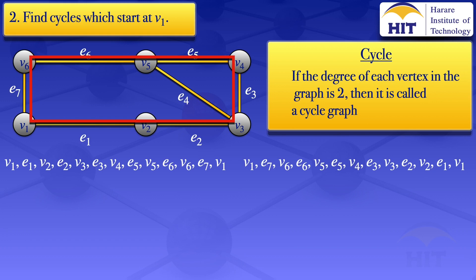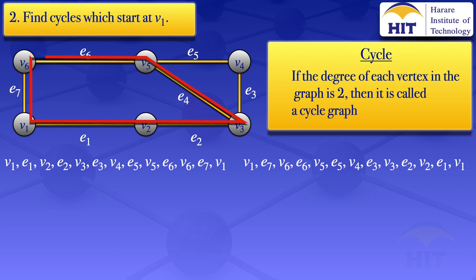This is a cycle again that starts at vertex v1. We can look at another one in the counterclockwise direction, highlighted in red, starting at v1 then going to v2, v3, v5, v6, then back to v1. For this cycle: v1, e1, v2, e2, v3, e4, v5, e6, v6, e7, v1.